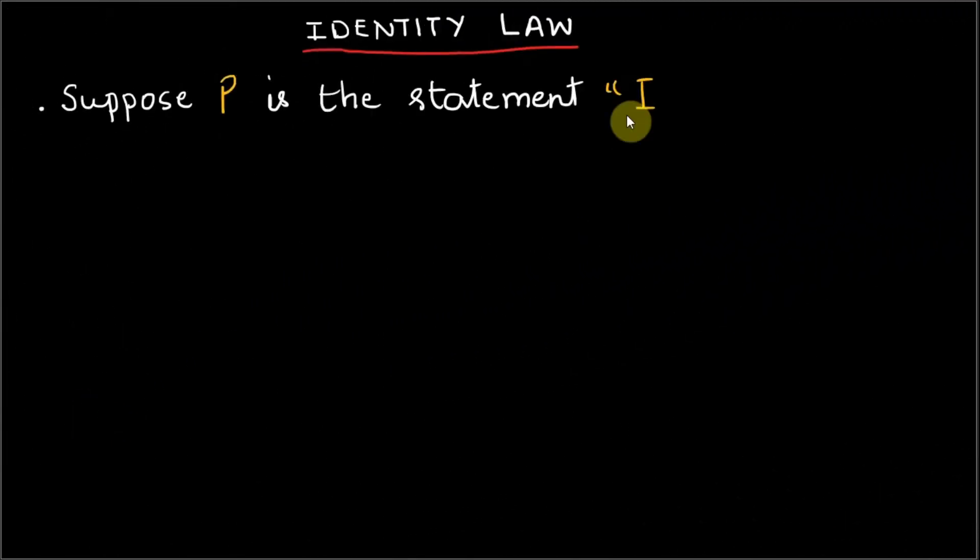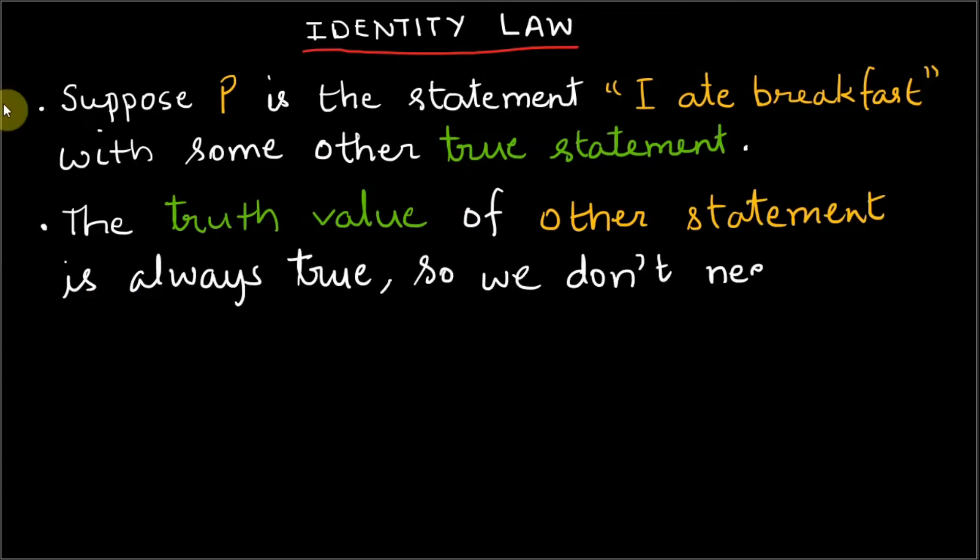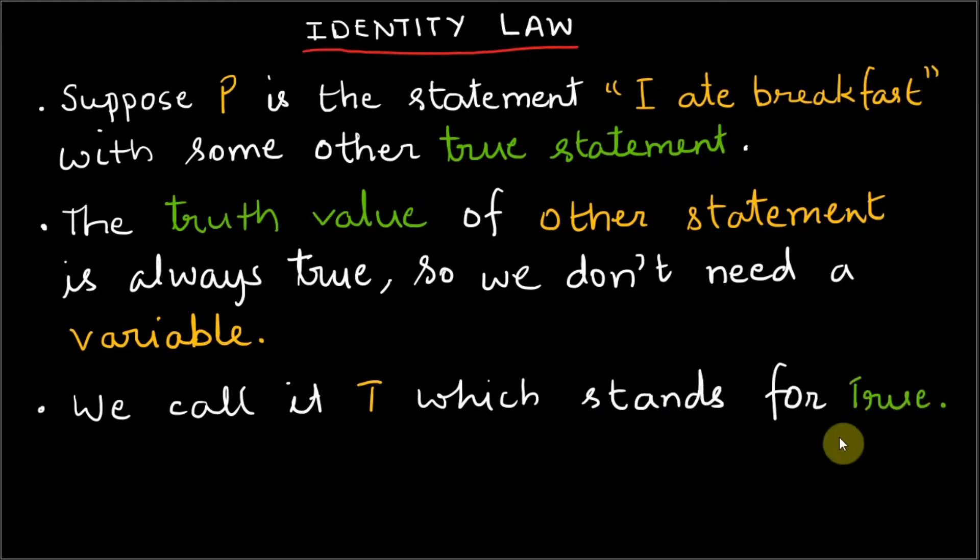Suppose P is the statement 'I ate breakfast' with some other true statement. The truth value of the other statement is always true, so we don't need a variable for that. Instead, we call it T, which stands for true.